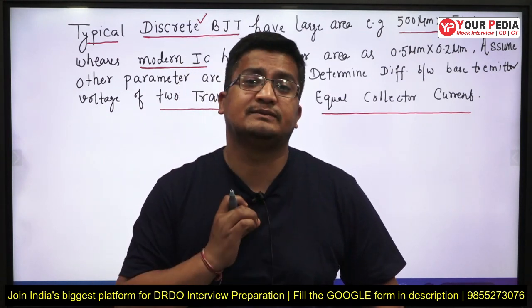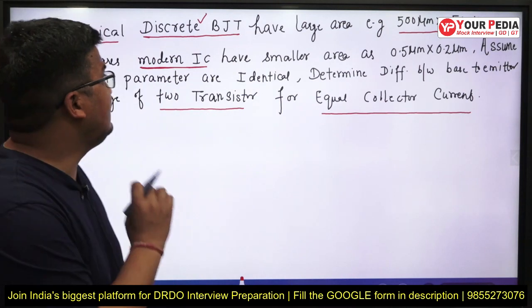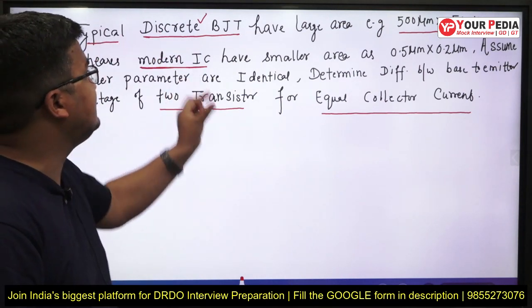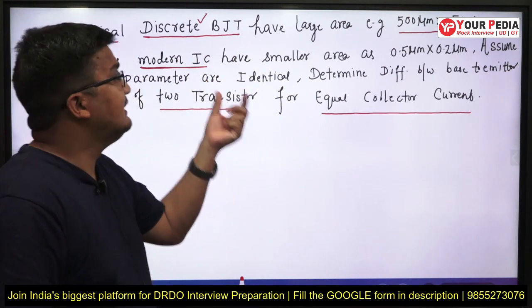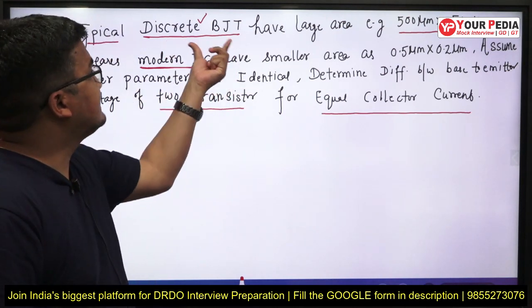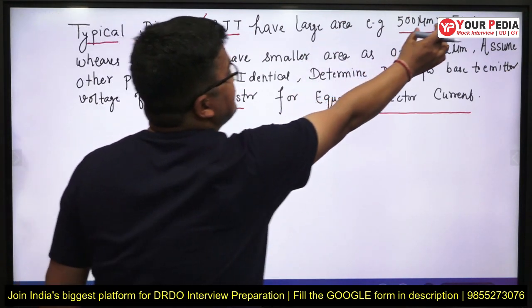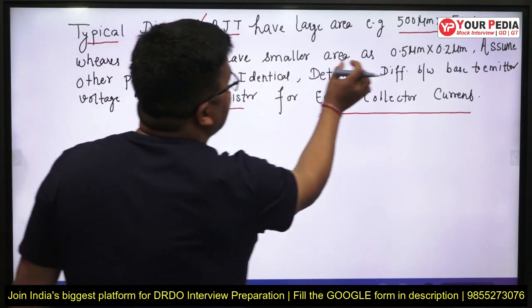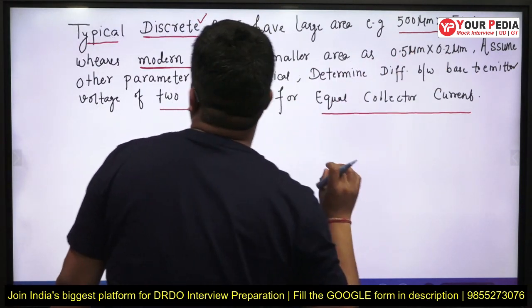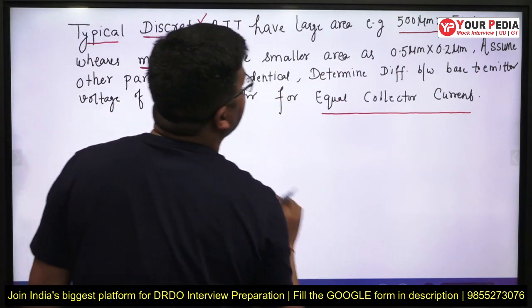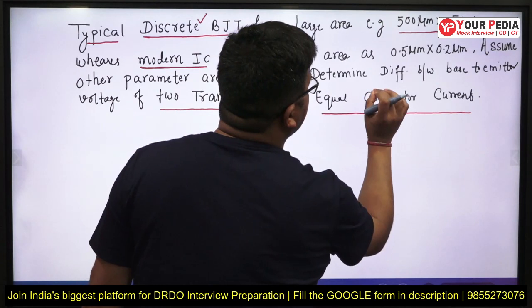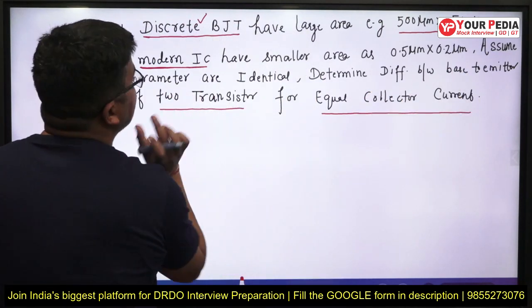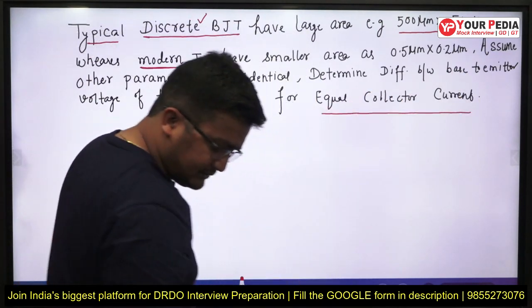Here is a typical DRDO interview question. Listen to the key terms. A typical discrete BJT has a large area — say this much — whereas a modern IC transistor has a smaller area — say this much. Assume all other parameters are identical. Determine the difference between the base-to-emitter voltage of the two transistors for equal collector current.